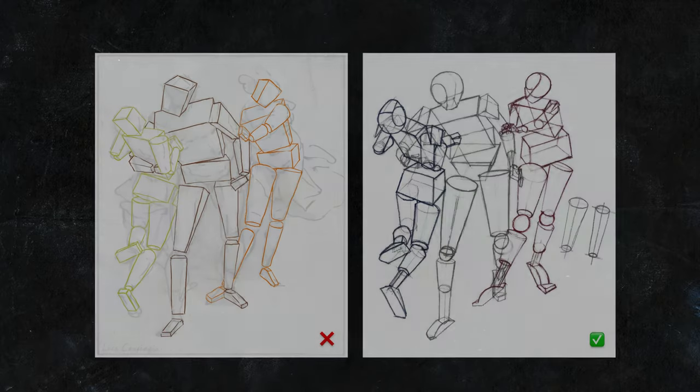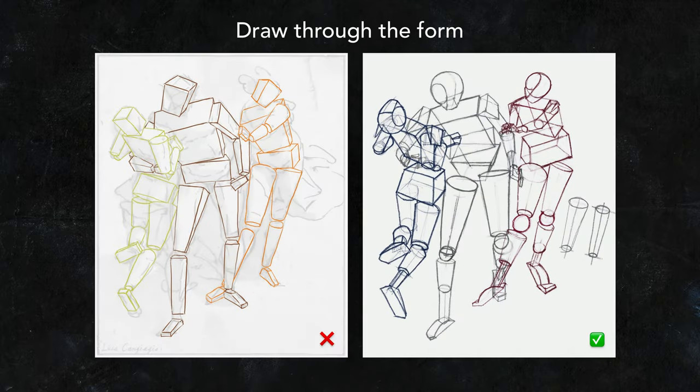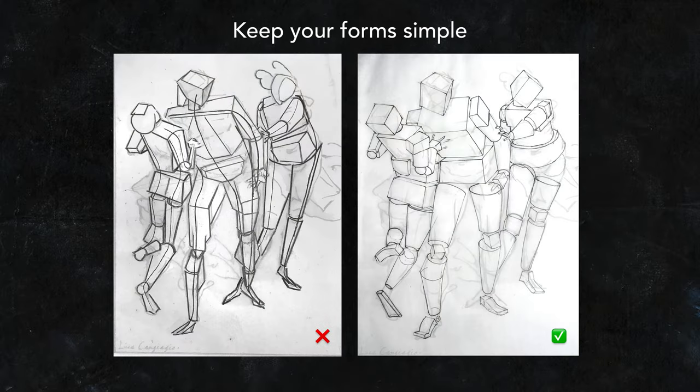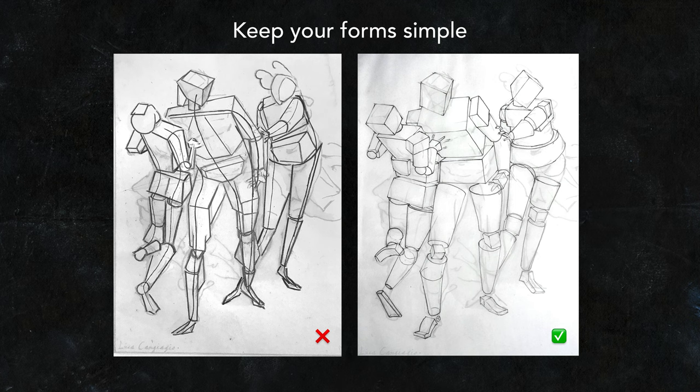Number two, draw through the form. Use x-ray vision. This will make it much easier for you to understand the forms you're drawing in 3D space. Number three, keep your form simple. The whole purpose of this assignment is to train the skill of simplification. If you make complicated forms, you're not simplifying well. And the drawing will also take much more time.